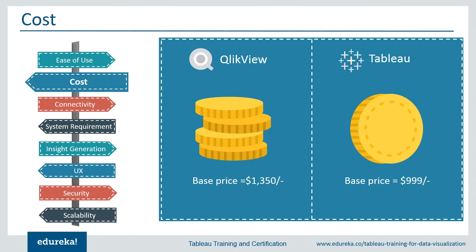Regarding license cost, QlikView's personal edition is free with limitations on document sharing. Each named user license has a base price of $1,350, and a concurrent user license costs $15,000. The server license is $35,000 per server with an additional $21,000 for PDF distribution. For Tableau, private versions come with a fixed fee of $999 or $1,999 depending on your data access. Tableau Server costs approximately $1,000 per server user with a minimum of 10 users plus maintenance. Both tools also offer free versions to try before investing.